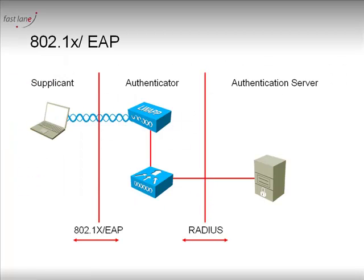First of all, some vocabulary. The wireless client is called the supplicant because this is the one asking for authentication. The access point and controller in between do not play any real role in the authentication itself. They are called the authenticator because that's where you ask for authentication, but they do not authenticate the client. The device that authenticates the client is the authentication server which sits in the background.